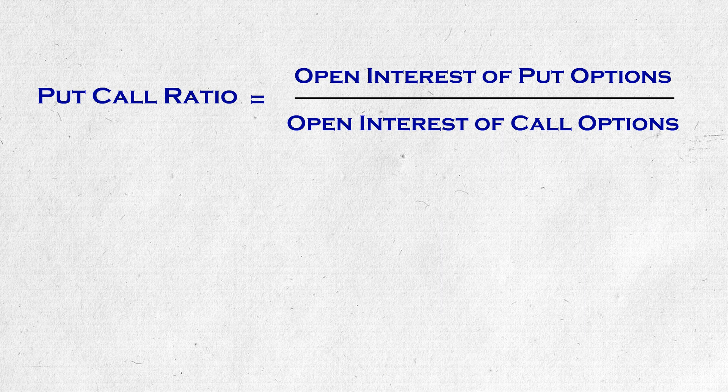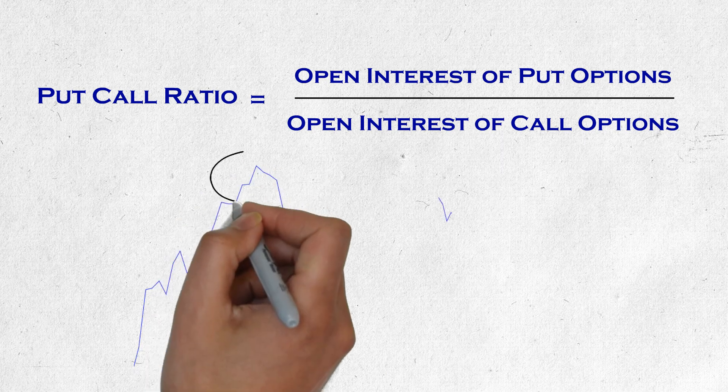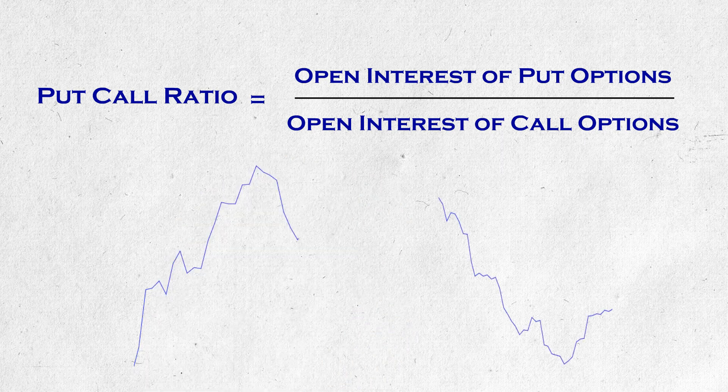Similar to RSI being traded as overbought when it reaches 70, this PCR can also be used as a trend reversal indicator by comparing with some metrics — that is, in a rising or falling market, we can predict the reversal points. That is why this is called a contrarian indicator, because we are thinking to go against the trend. This can also be called a sentimental indicator, as PCR helps us in analyzing market participants' sentiments.